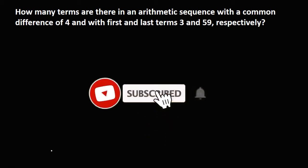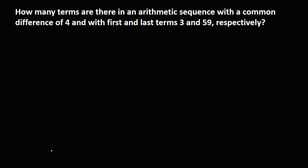Okay, so let's solve this problem. How many terms are in the arithmetic sequence with common difference of 4 and first term and last terms 3 and 59, respectively?